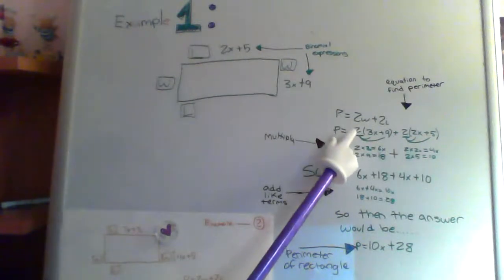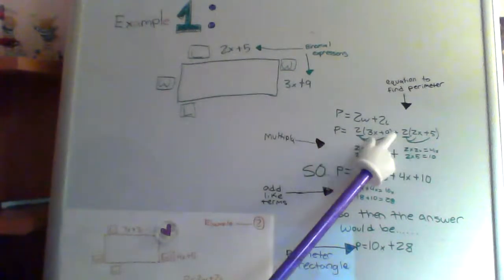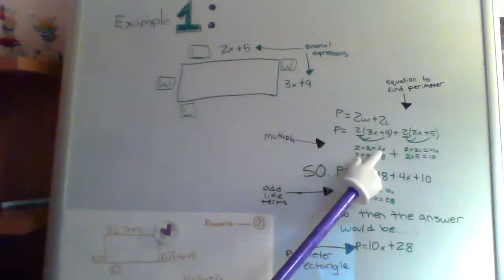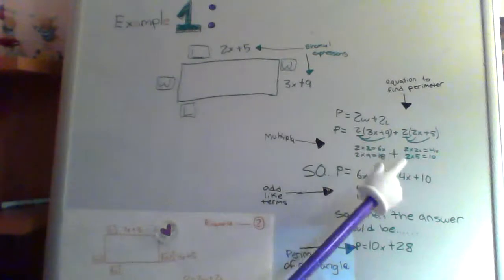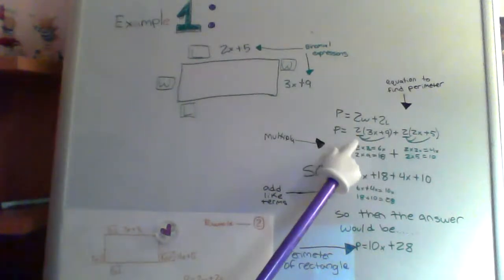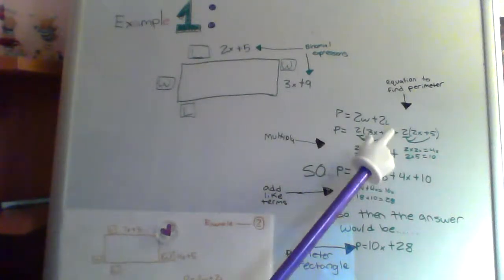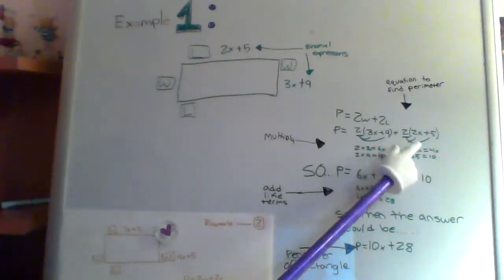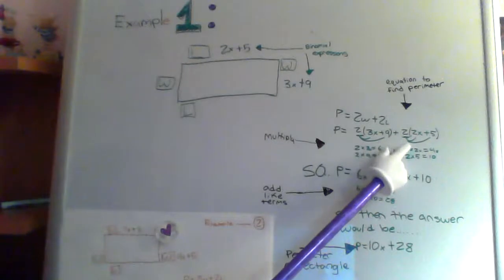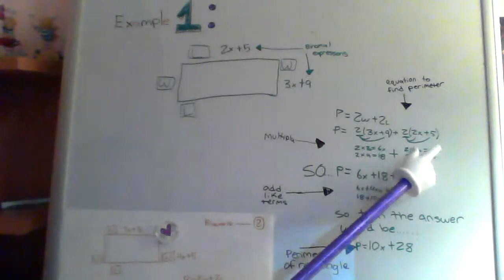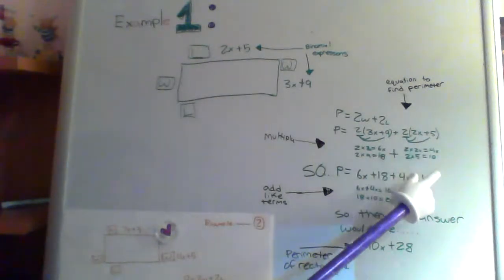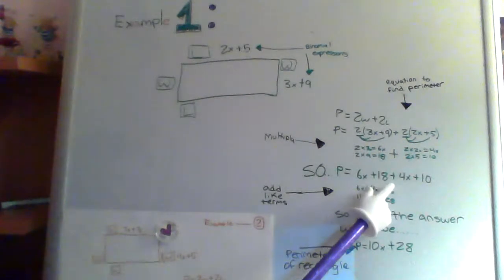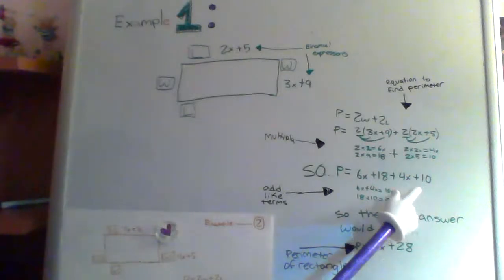You'd multiply the 2 by the numbers inside. So you'd go 2 times 3X, which equals 6X, because you have to carry over the X into the number. Then you do 2 times 9, which is 18. And then you'd have to do the same on the length. So it would be 2 times 2X, which equals 4X, and then 2 times 5, which equals 10. So after that, you have 6X plus 18 plus 4X plus 10.